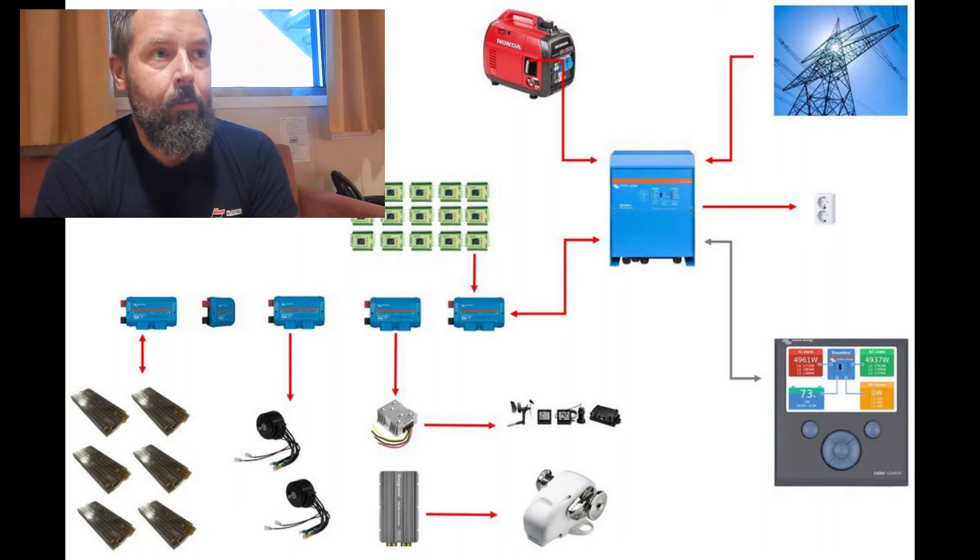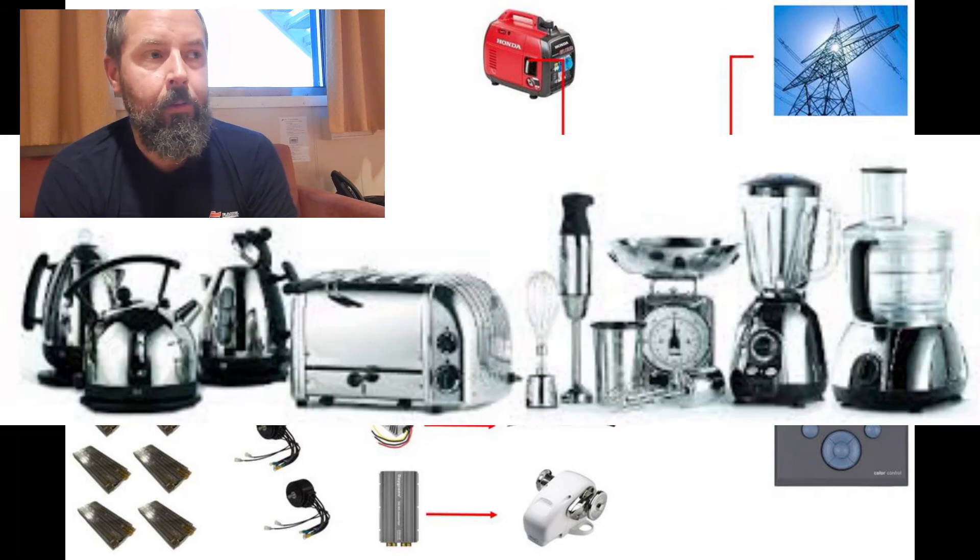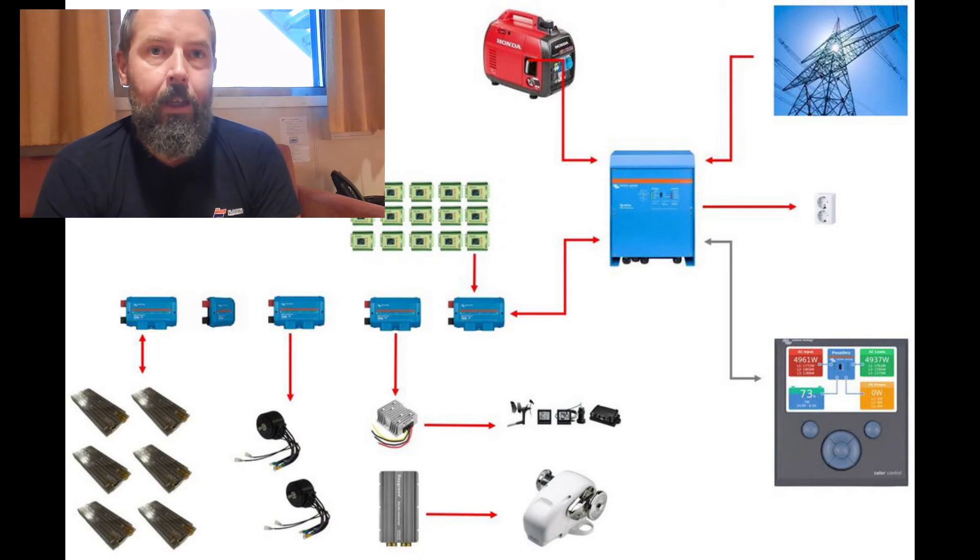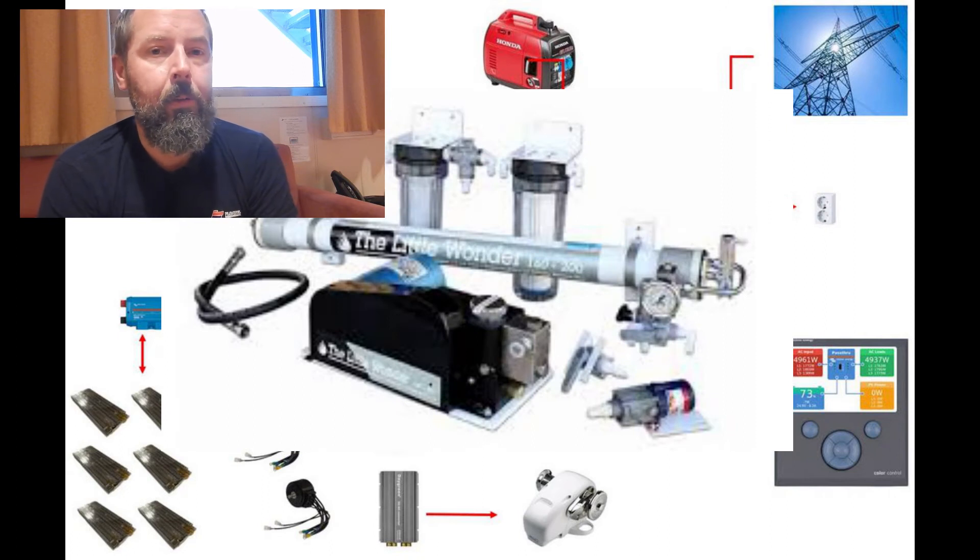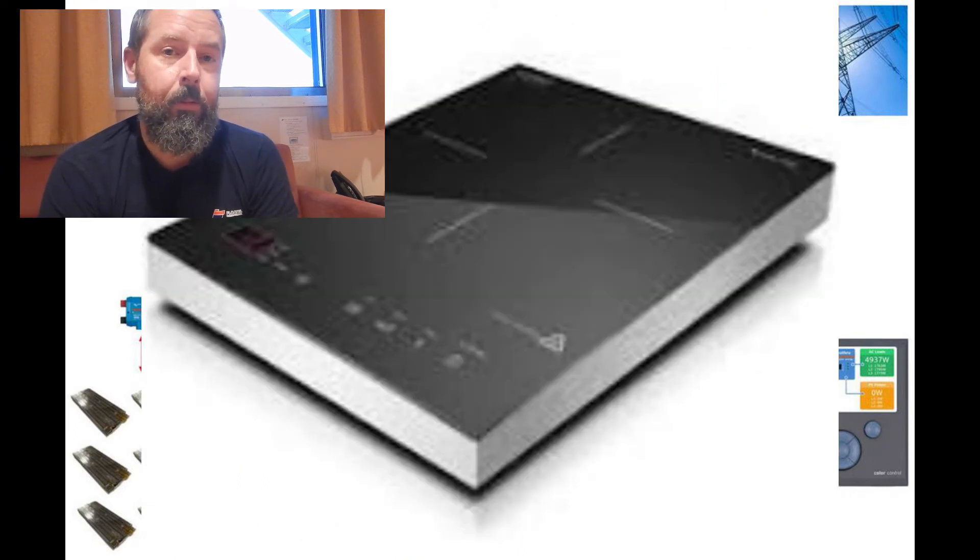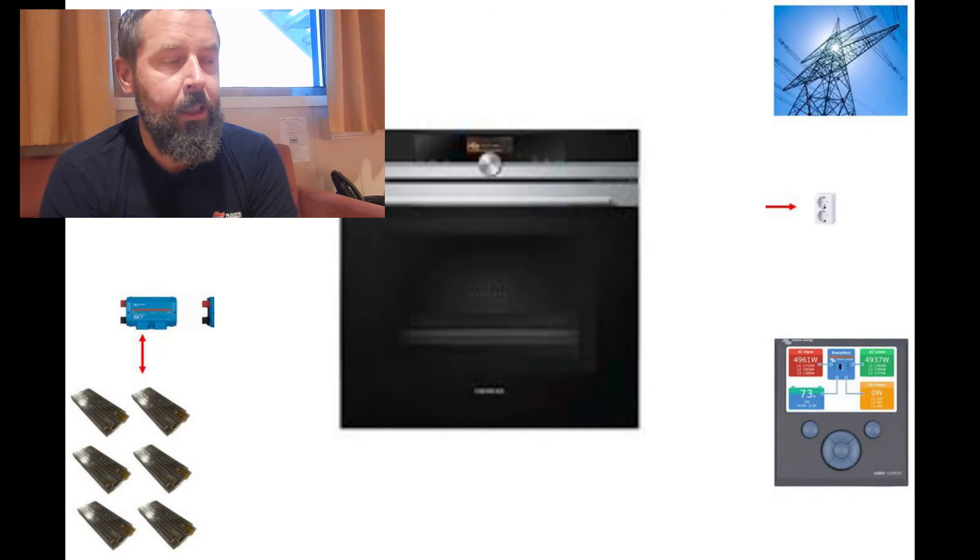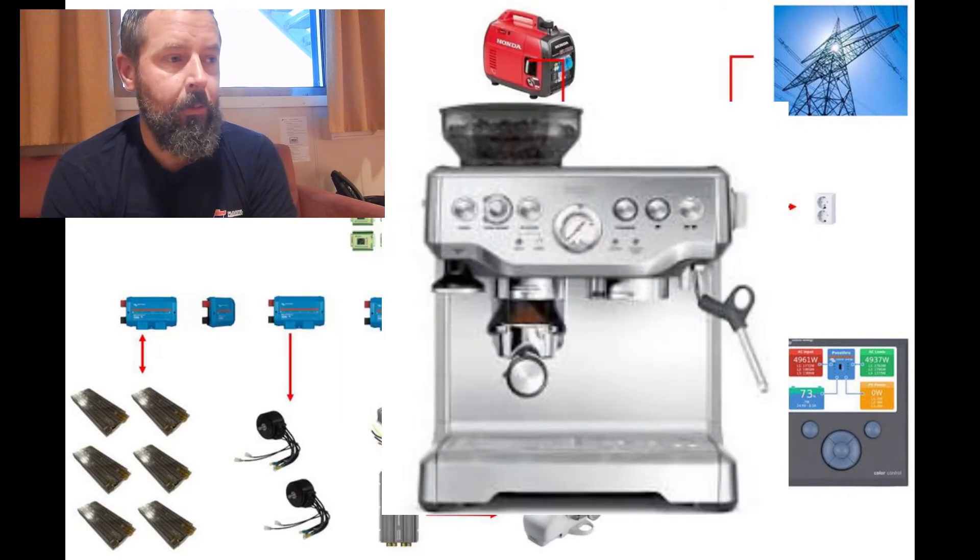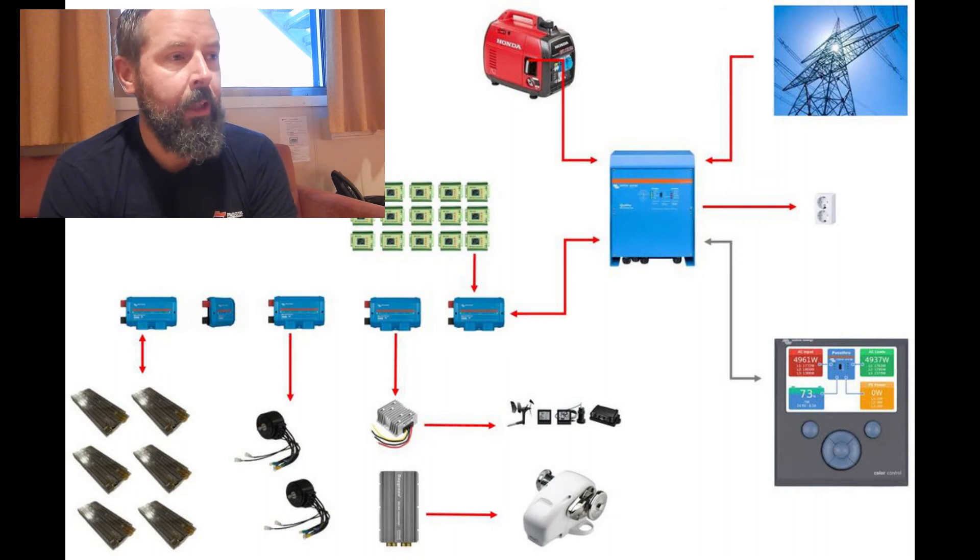And then the batteries, of course, supply power to the inverter charger, converting it to 220 volt, taking care of all the 220 loads on board. That'll be kitchen appliances, things like that, and a few outlets for the water maker, that's going to be a 220 version, and for induction cooktop, electrical oven, coffee makers, kettles, stuff like that. And if I need any power tools, then they'll do that as well.